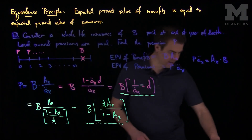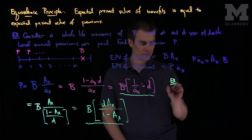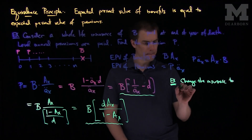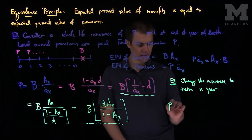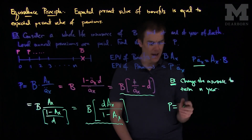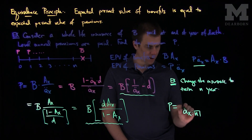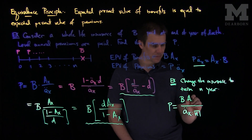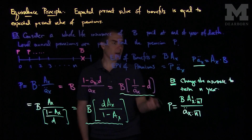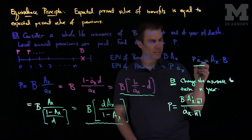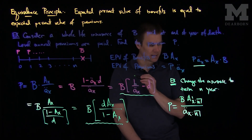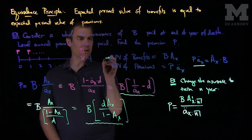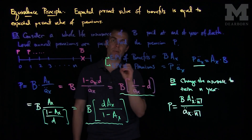We can make modifications to this. For example, if we change the insurance to term insurance, the premium function changes: in the denominator we'll have an n-year annuity-due A-double-dot_{x:n|}, and on top we'll have a term insurance expression for benefit B up to time n. We can also change to n payments, or a deferred policy where the death benefit is pushed past n years. There are a variety of ways to compute these premiums, but the fundamental principle is that the expected present value of benefits equals the expected present value of premiums. When you equate those two, you can compute premiums for any insurance policy.